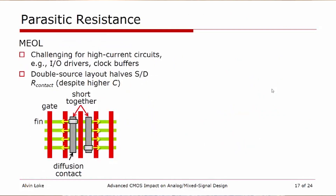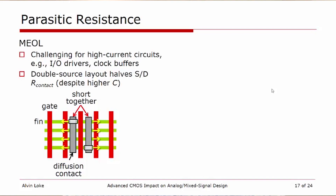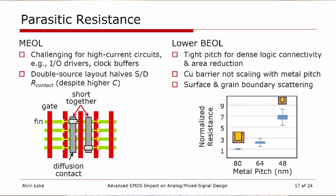Perhaps the most notable aspect of designing in a FinFET node is parasitic resistance. The high parasitic resistance in source-drain contacts is especially challenging for high-current circuits such as IO drivers and clock buffers. One common technique is a double-source layout, where a dummy gate is inserted in between to land an additional contact, splitting the current and halving the contact resistance. In the back end — particularly the lower layers — parasitic resistance is especially prevalent. The problem with copper interconnects is that the barrier is not scaling with metal pitch, and combined with surface and grain boundary scattering, there is a substantial increase in normalized resistance as we scale the metal pitch.